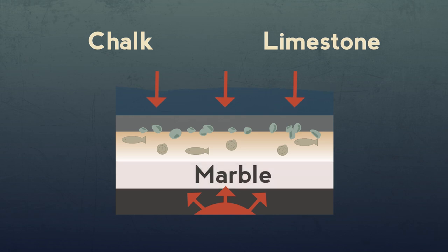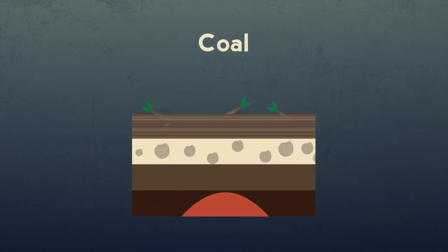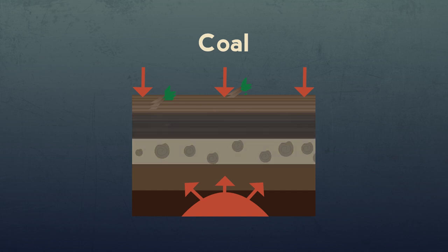Another rock formed by living things is coal and the related fossil fuels. Peat is formed as vegetation in bog land is unable to rot. Under the heat and pressure the peat metamorphizes into coal.